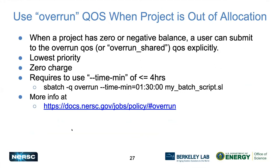When your project allocation reaches zero active balance, you can submit to the overall QoS or overall_shared if you want shared nodes. Note: priority is zero and there's no charge. You must explicitly specify -q overall with a wall time, and include time-minimum of up to four hours in your script.